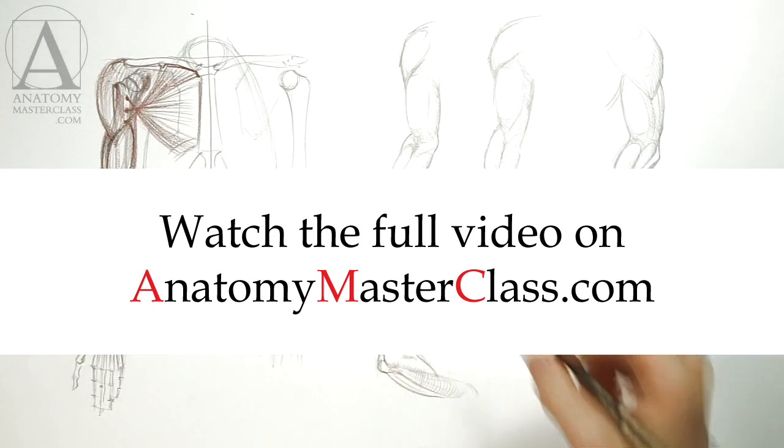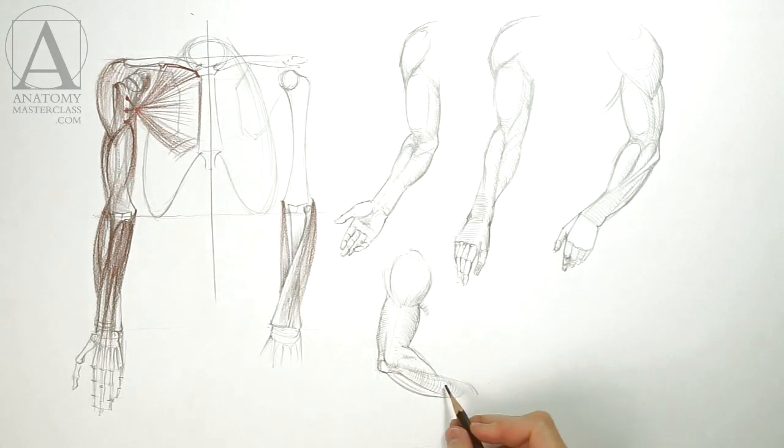Again, to realistically depict the arm in such a position, you need to draw these two straight lines, the lines of the ulna and the lines of the radius.